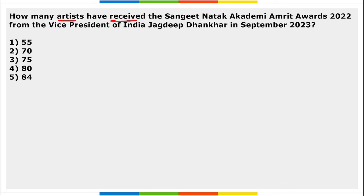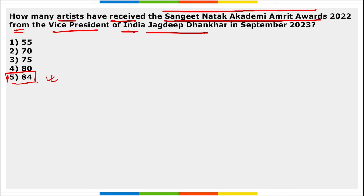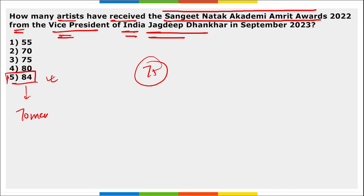How many artists received the Sangeet Natak Akademi Amrit Award 2022 from the Vice President of India, Jagdeep Dhankhar? A total of 84 artists received this award from the Vice President in September. This award was constituted to honour Indian artists aged above 75 years who have not been accorded any national honour in their career so far. Out of 84, 70 were men and 14 were women.